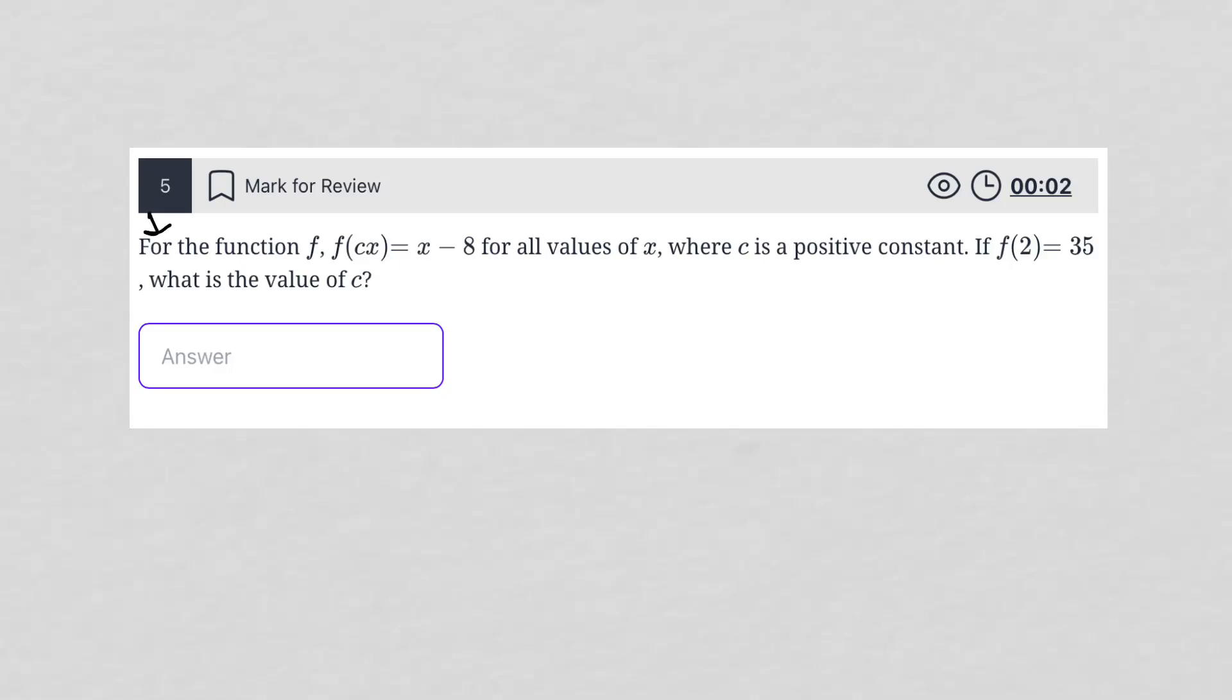So this question says, for the function f, f(cx) equals x minus 8 for all values of x, where c is a positive constant. If f(2) equals 35, what is the value of c?